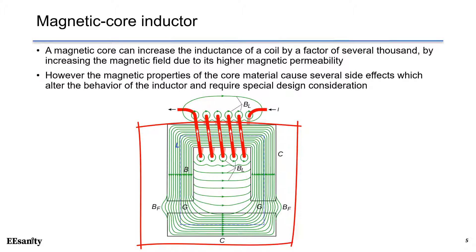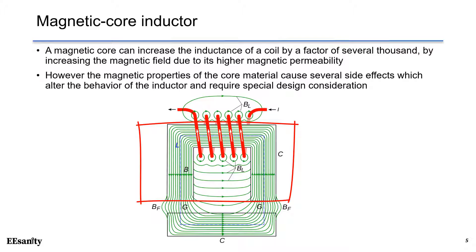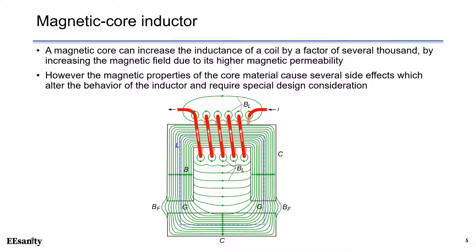As shown, the core comes in two pieces: one piece is a C shape and the second piece is an I shape. The magnetic core is the heart of a power inductor. However, the magnetic properties of the core material will cause several side effects that can alter the behavior of the inductor, so it requires special design considerations.